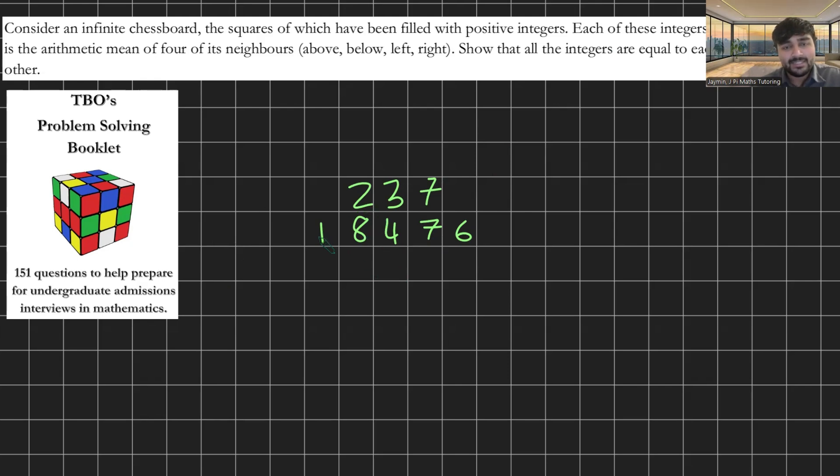So for example if this is 8 here, it's the arithmetic mean of its four neighbors. So the four neighbors here would have to add up to 32, so this would then have to be 25 in order to make 8 the arithmetic mean. And then I could go here and go okay well 4 is 8 plus 7 plus 3, well that'd have to be minus 2. So this is already broken. Anyway that's kind of the idea here.